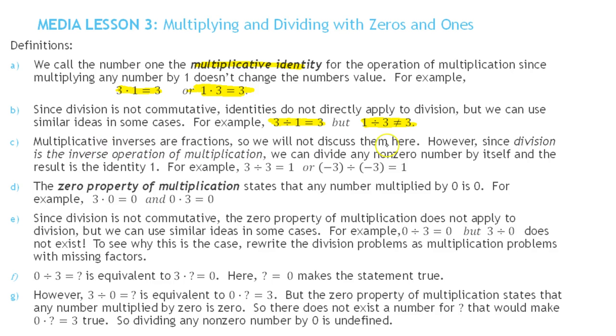Multiplicative inverses are fractions, so we won't discuss them, but division is what we call the inverse operation of multiplication. Basically, division undoes multiplication. If I took 12, multiplied by 3, and then divided by 3, I don't even have to think about this. The answer is 12. Multiplying by 3 and dividing by 3 are opposites, so I'll get back my original number.